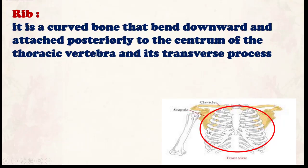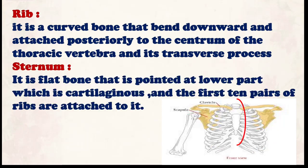Ribs are curved bones bent downward, attached posteriorly to the centrum and transverse process of the thoracic vertebrae. The sternum is a flat bone pointed at its lower part. Its lower part is cartilaginous, and the first 10 pairs of ribs are attached to it. The remaining two pairs (ribs 11 and 12) join vertebrae number 18 and 19 and do not connect with the sternum — these are called the floating ribs.